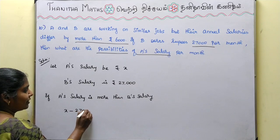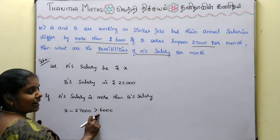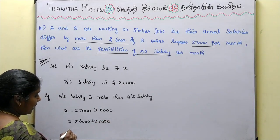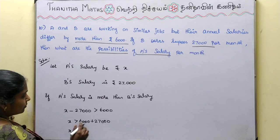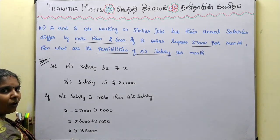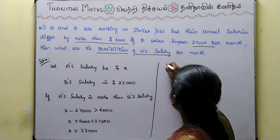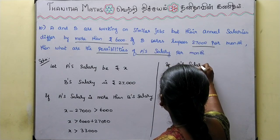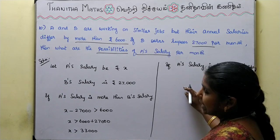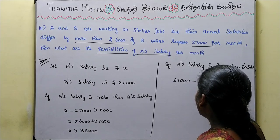B's salary is 27,000. If A's salary is less than B's salary, then we have: 27,000 minus x is greater than 6,000, which gives x less than 21,000.